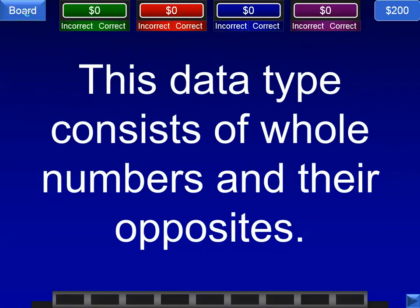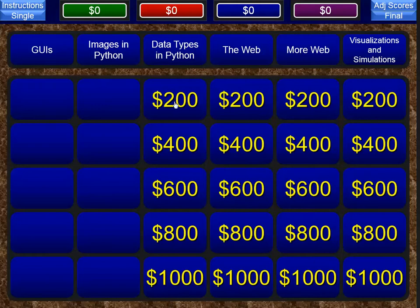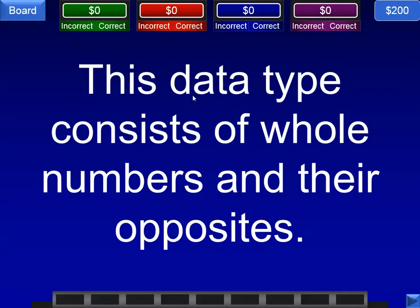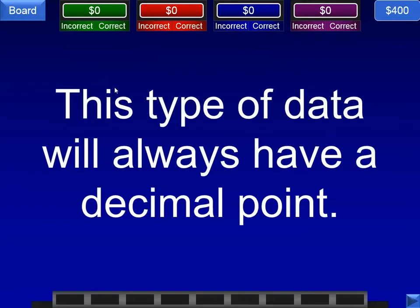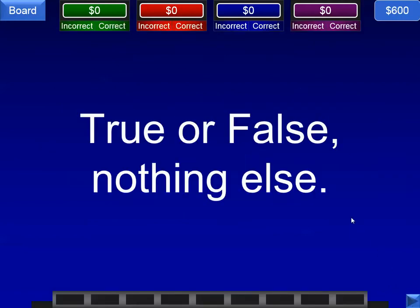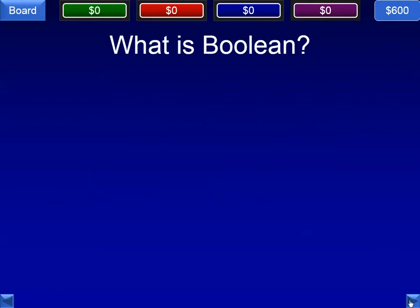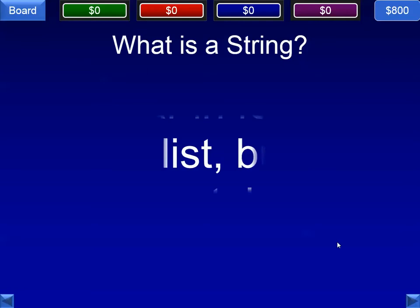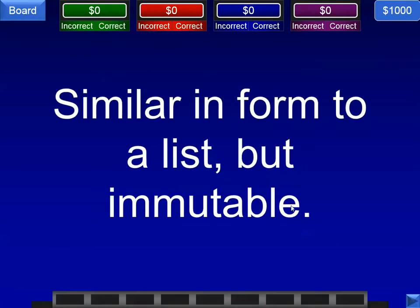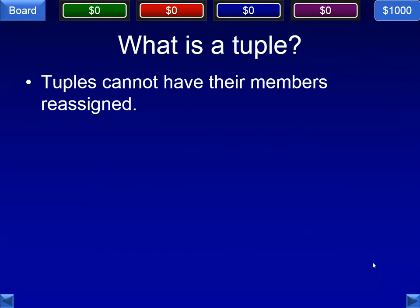Next category is data types in Python. This data type consists of whole numbers and their opposites — that is an integer, or int. This type of data will always have a decimal point — that is a float. True or false, nothing else — that is a boolean. Most of the time it is text, but it really can be any characters — that, of course, is a string. Similar in form to a list, but it is immutable — that is a tuple. Tuples cannot have their members reassigned.